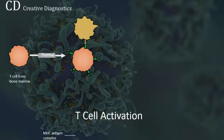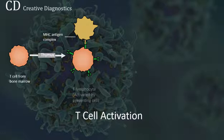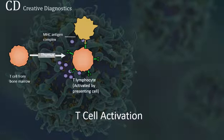These immature T-cells migrate to the thymus via the blood. The thymus is a lymphatic system gland that functions mainly to promote the development of mature T-cells. T-cells originate in the bone marrow and mature in the thymus.